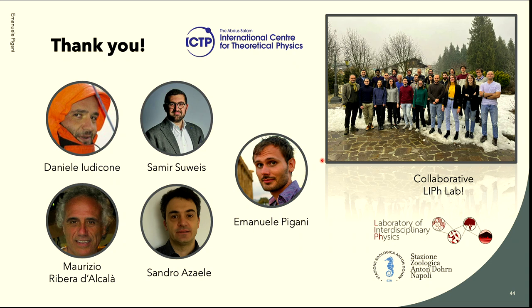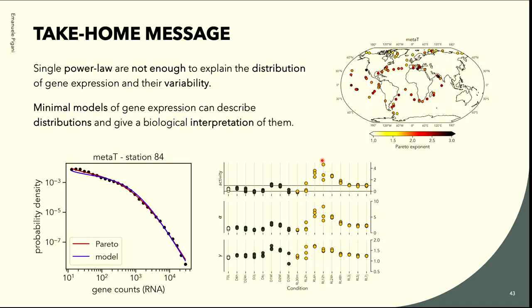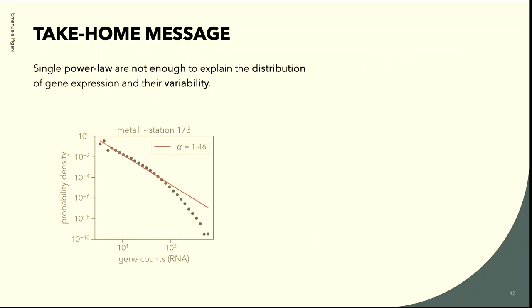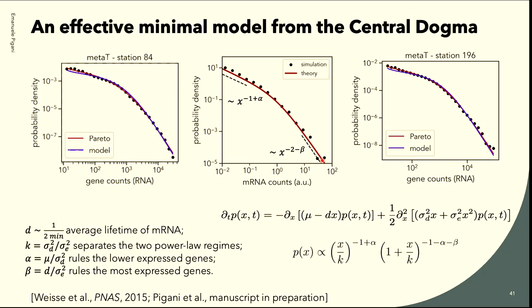Audience question: In the model, what is causing some genes to be much higher expressed than other genes? There are four or five orders of magnitude difference in mRNA levels of different genes. So in the model, why is a highly expressed gene high and a low expressed gene low — what's the mechanistic origin?